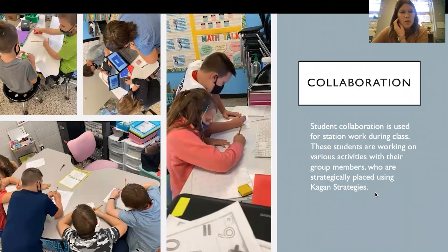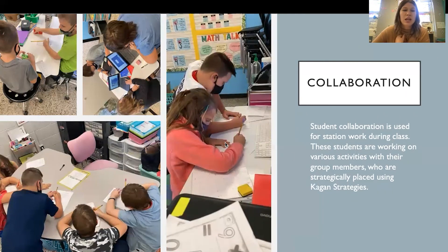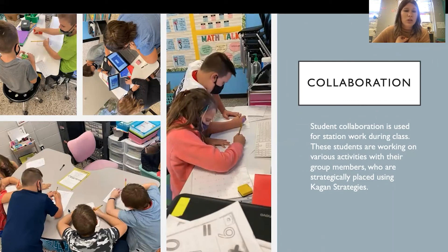Here are some examples of collaboration in my room. These are during stations. So you can see that we have a technology station, we have automaticity, we have my small group teacher table, and then we have like a skill station. And these are all based on Kagan and star scores, and that is how I place these students.